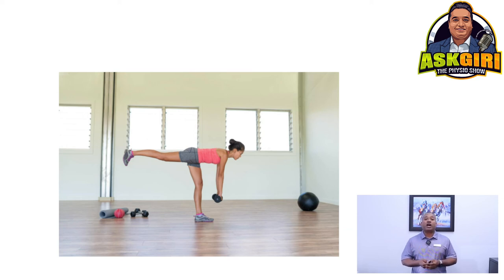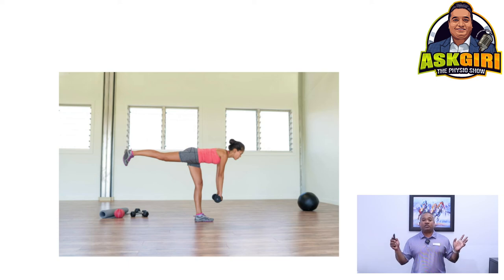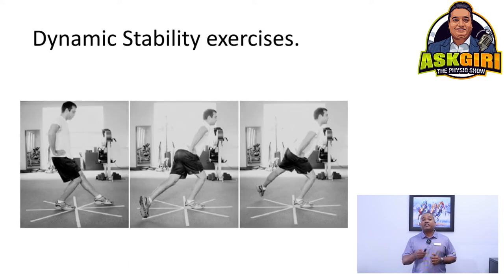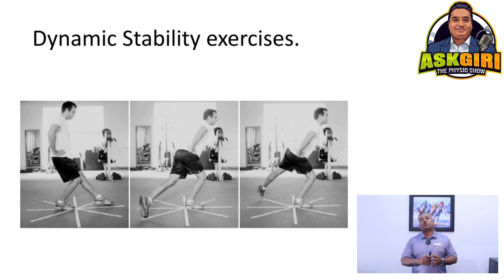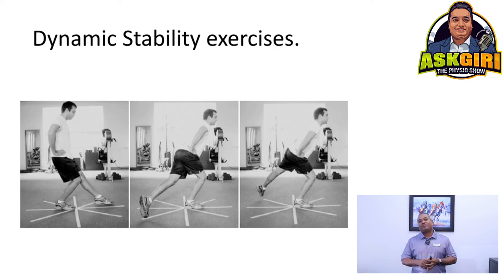For stability exercises, single-leg deadlifts are excellent, but there are progressions for every ability level. Dynamic stability exercises include star excursion reaches — forward, side, back, and diagonal. We also do jumps, landing, agility ladder, medicine ball drills, and foot beam training — walking on a round, circular beam — which is very challenging and targets the stability most feet lack from being constantly confined in shoes.